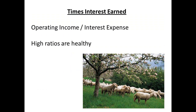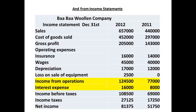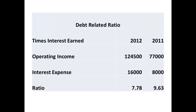Finally, the times interest earned, which is obtained by dividing operating income by the interest expense. Higher ratios indicate greater health and greater likelihood that the company can meet debt payments. The figures required are obtained from the income statements. There has been a fall from 9.63 in 2011 to 7.78 in 2012. Although operating income has increased, so has interest expense. This might signal an area to watch.